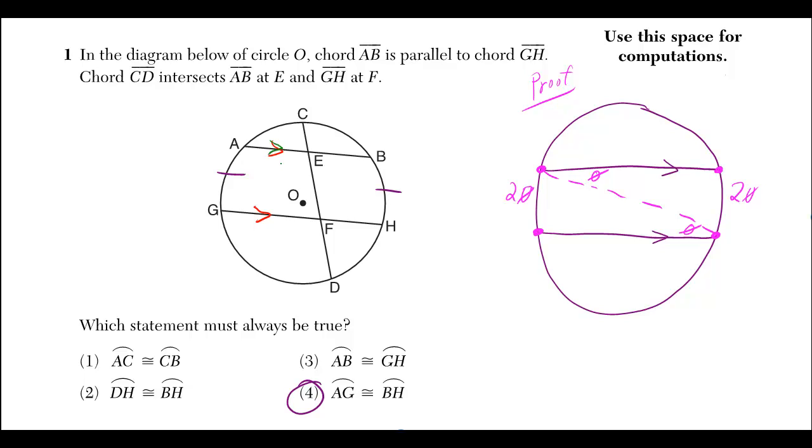They could have just put in the parallel symbols for us. And it's pretty obvious that chord CD intersects AB at E and at F.